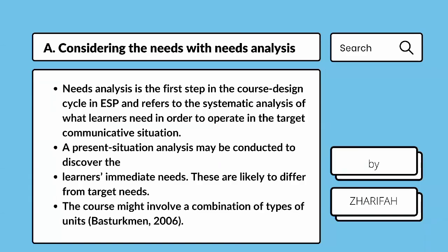First, considering the needs with needs analysis. Needs analysis is the first step in the course design cycle in ESP and refers to the systematic analysis of what learners need in order to operate in the target communicative situation. A present situation analysis may be conducted to discover the learner's immediate needs, which are likely to differ from target needs. The ESP syllabus might be defined at the macro level — for example, oral skills for a radio announcer — and the actual content of the course would be expressed by functions such as persuading, entertaining, and so on.